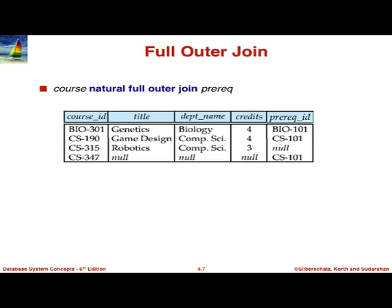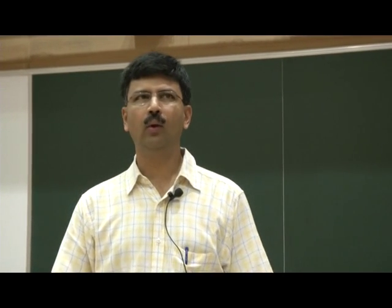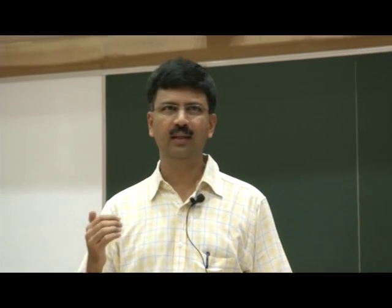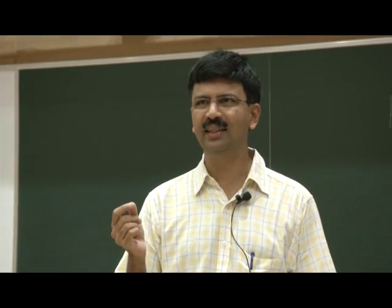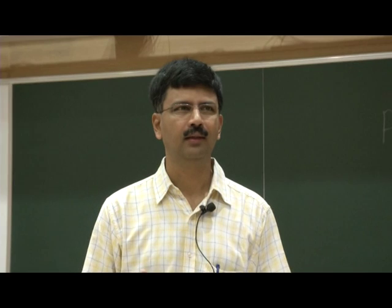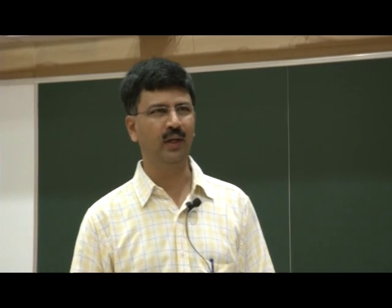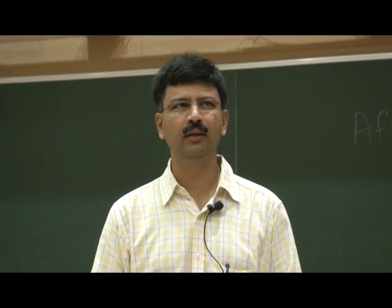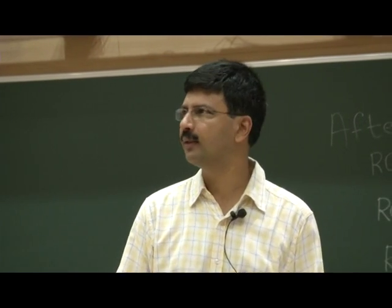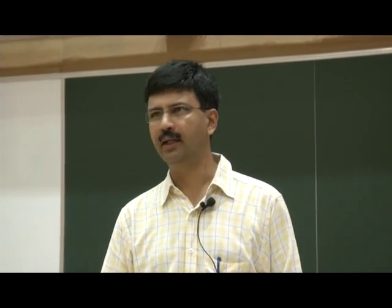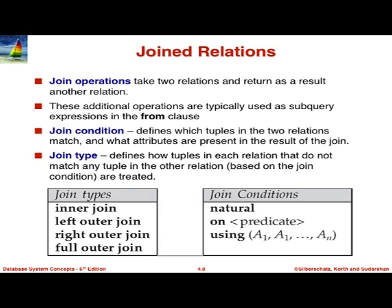The SQL syntax for outer join couldn't be put in the where clause — Oracle tried this with a 'plus equals' notation, which is a very clumsy notation. Oracle eventually gave up on it and discourages its use, though they still support it for backward compatibility. The right syntax, supported by all major databases, explicitly says which rows have to be preserved. For outer joins, the ordering in the from clause matters, unlike regular join where ordering doesn't impact the result.